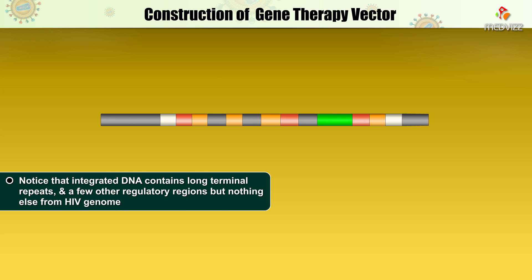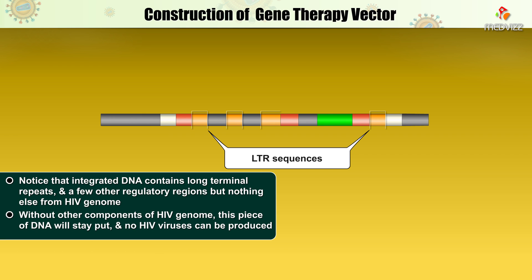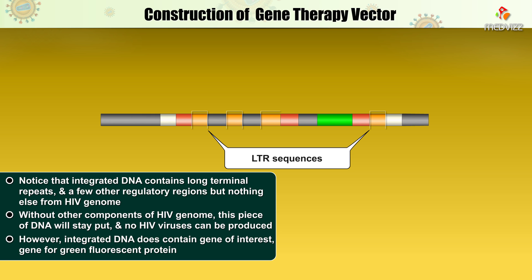Notice that the integrated DNA contains the long terminal repeats and a few other regulatory regions, but nothing else from the HIV genome. Without the other components of the HIV genome, this piece of DNA will stay put and no HIV viruses can be produced. However, the integrated DNA does contain the gene of interest — the gene for green fluorescent protein.